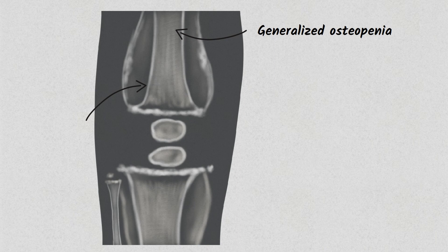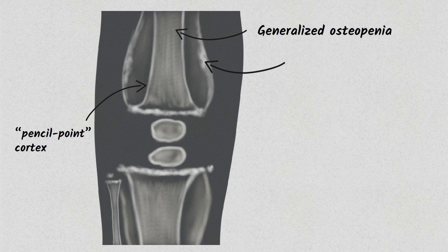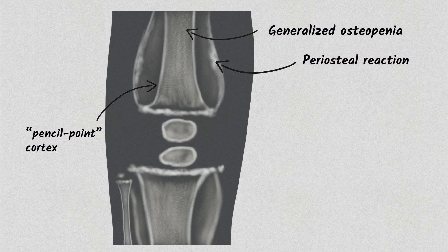And here this is periosteal reaction. It is due to subperiosteal hemorrhage. Here you can see dense zone of provisional calcification which is called Frankel line.